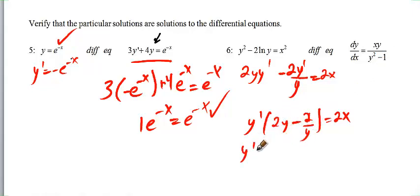So y prime, because we only have one factor over here. So this is going to be 2y squared minus 2 over y. So I multiply top and bottom by y here. Equal to 2x.